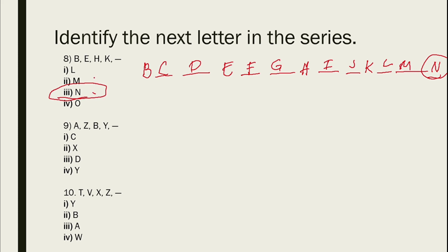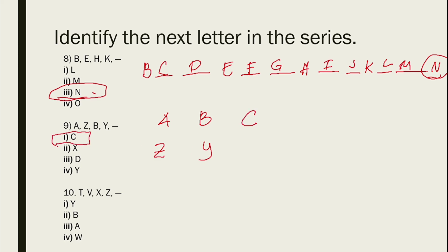For number 9, we have A, Z, B, Y. There are two interval sequences — one going from A to Z forward, and one going from Z to A backward. So the next letters continue: A, B, C in the forward sequence and Z, Y in the reverse. Therefore, the next letter is C.